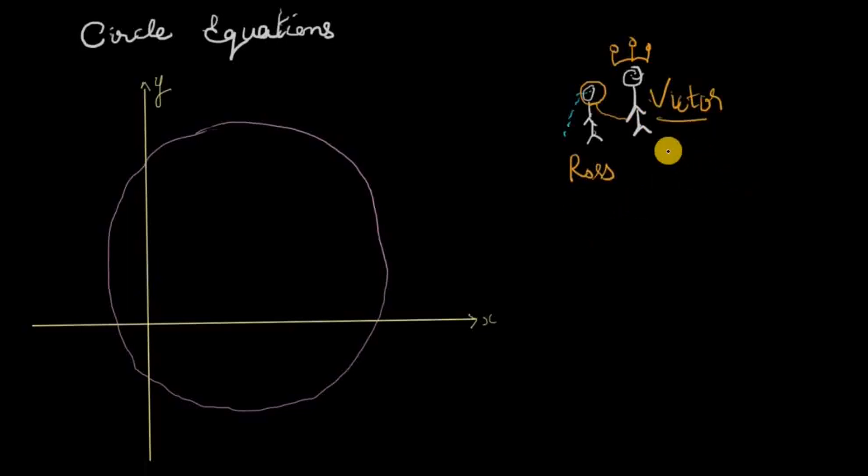You see, King Victor was obsessed with maths, and in particular, equations. He knew the equation for a line. He knew equations for curves, the ones that look like smiley faces and stuff. But he did not know the equation for a circle, and none of his court members could figure that out. So he said to Ross that if you can figure this out, I'll let you live.